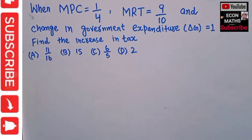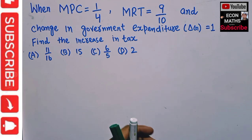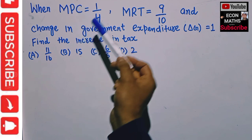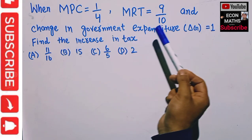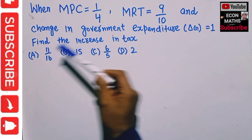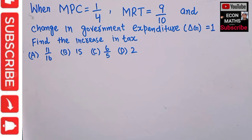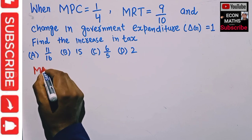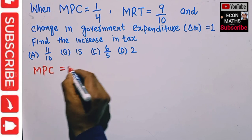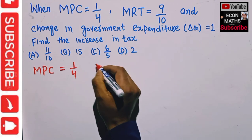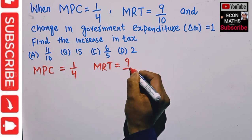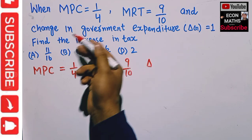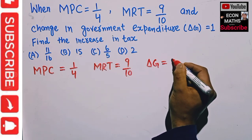In this video we will learn how to find out the change in tax due to the change in government expenditure, given the MPC and MRT. The question is: when marginal propensity to consume is 1/4, marginal rate of tax is 9/10, and change in government expenditure (ΔG) is 1, we need to find out the increase in tax.